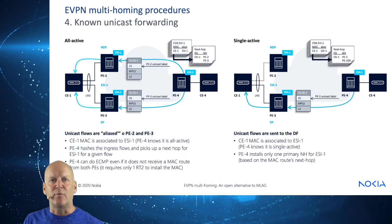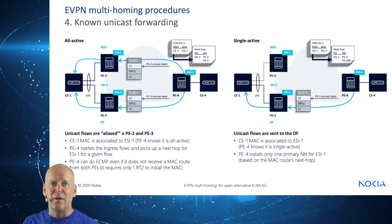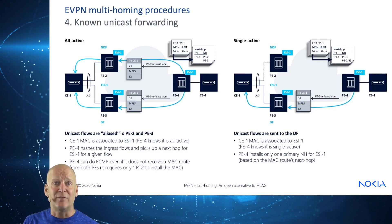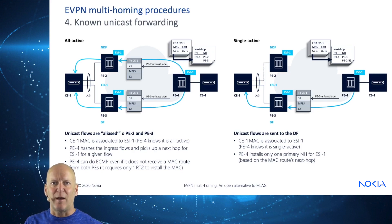For known unicast forwarding, unicast flows are aliased to PE1 and PE2. CE1's MAC is associated to ESI1 with an RT2 route. PE4 knows it's all active, hashes the ingress flows, and picks a next hop for the ESI for a given flow. For single active, CE1's MAC is associated to ESI1, so PE4 installs only one primary next hop for ES1 based on the MAC route's next hop.